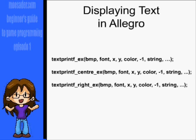In Allegro, drawing text to the screen is very easy. All you have to do is call one function and it draws it all out for you. There are a few variations of the text printf functions, and here's how they work.